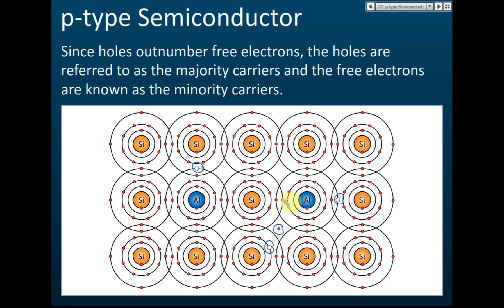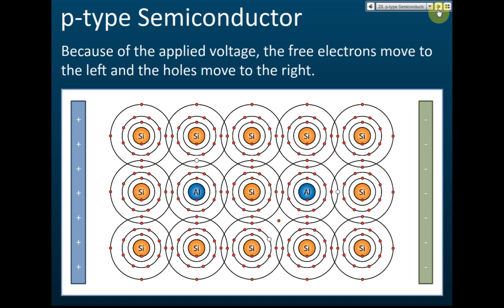This may be asked in an exam — they will ask what is the majority charge carrier in a P-type semiconductor and what is the minority charge carrier. So remember: in P-type, majority carrier is holes and minority carrier is free electrons.